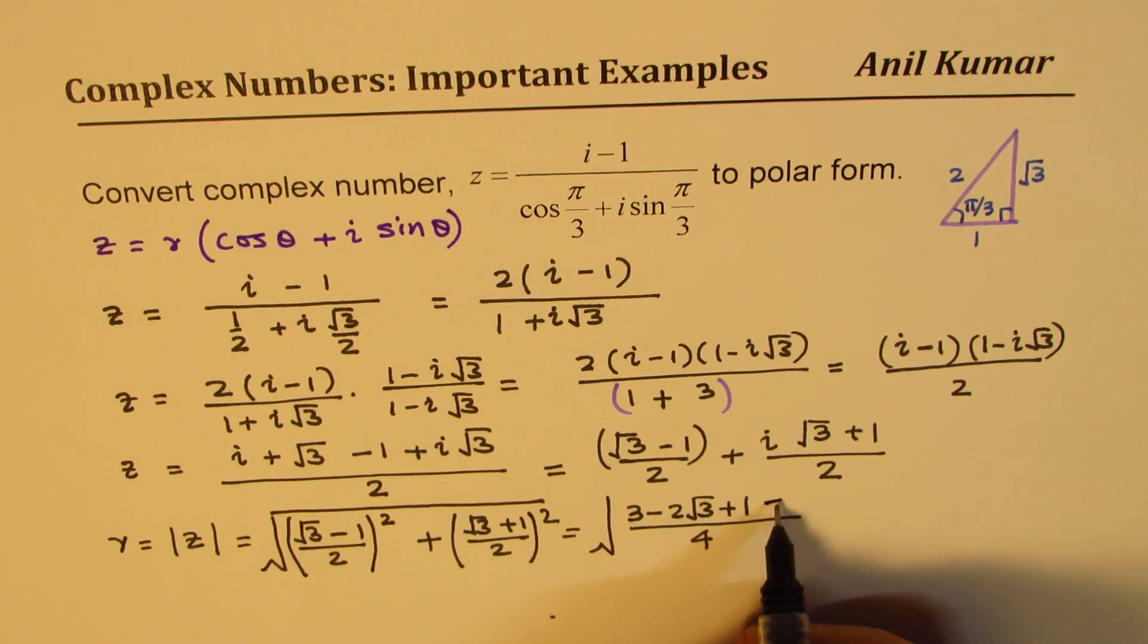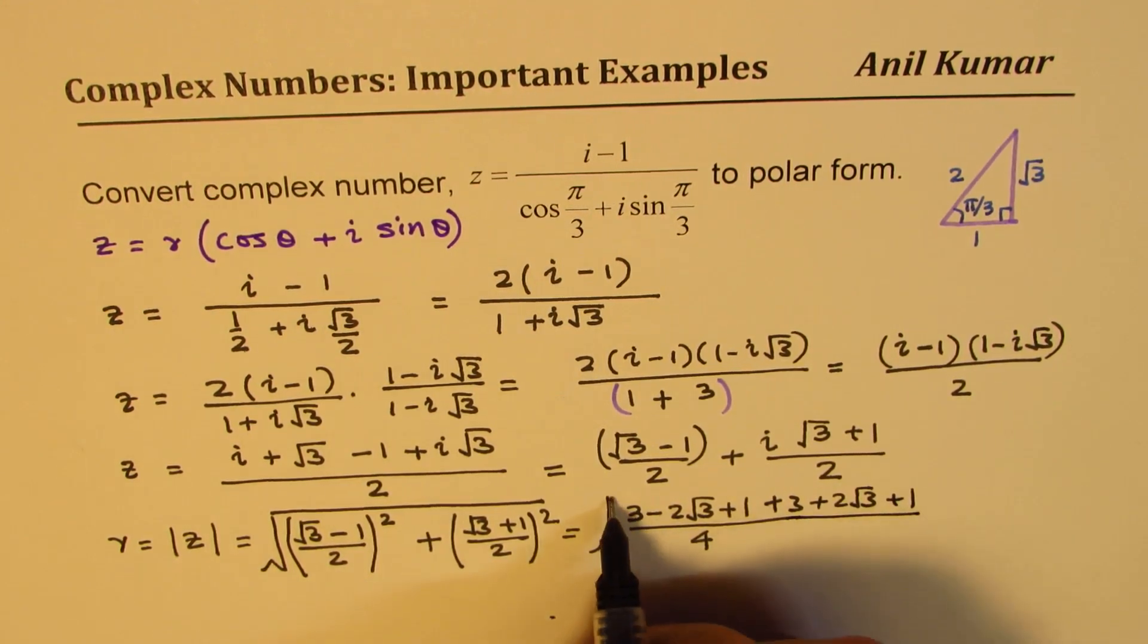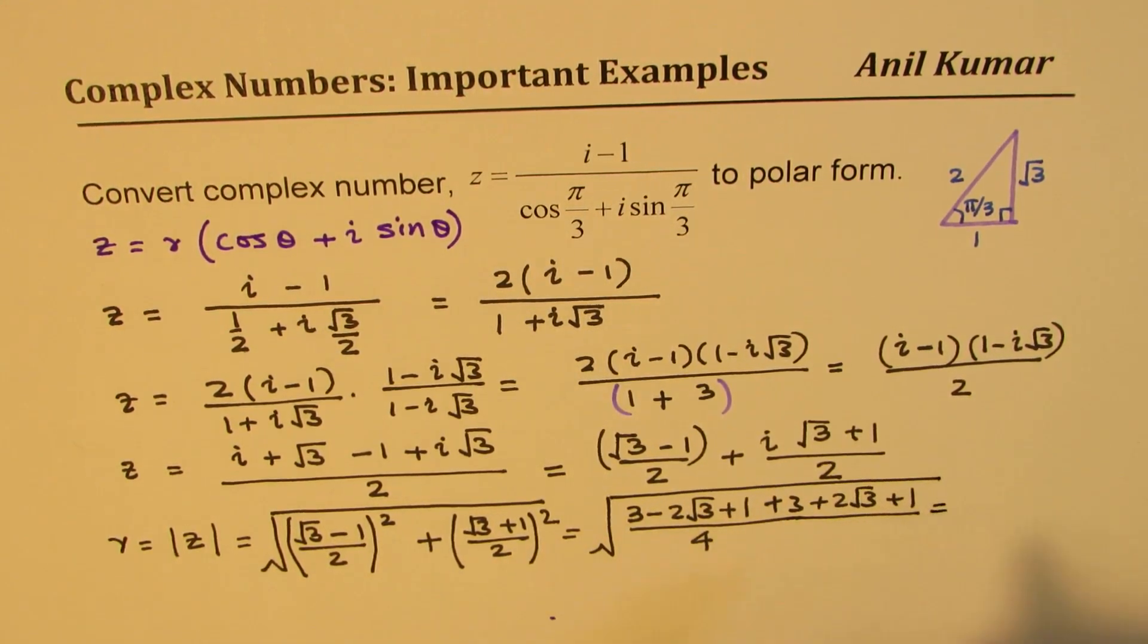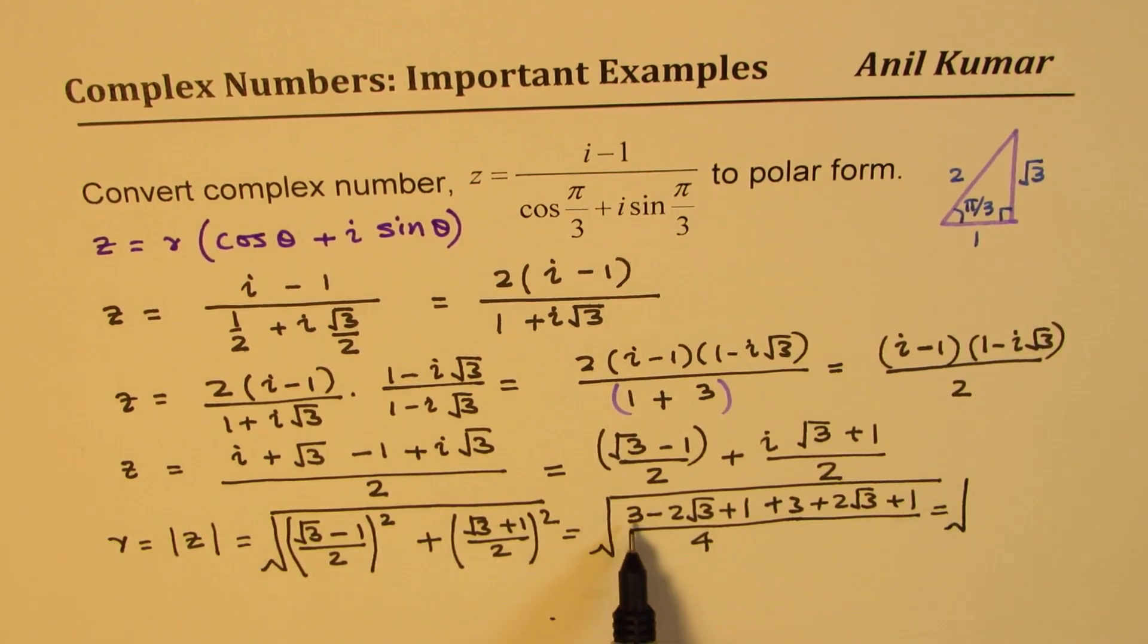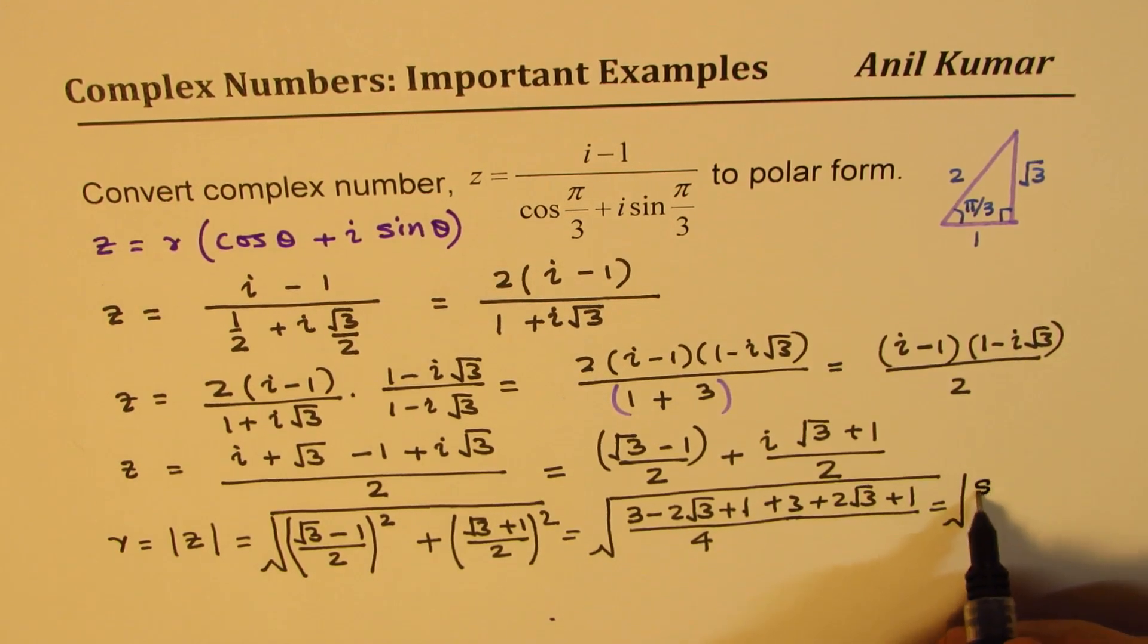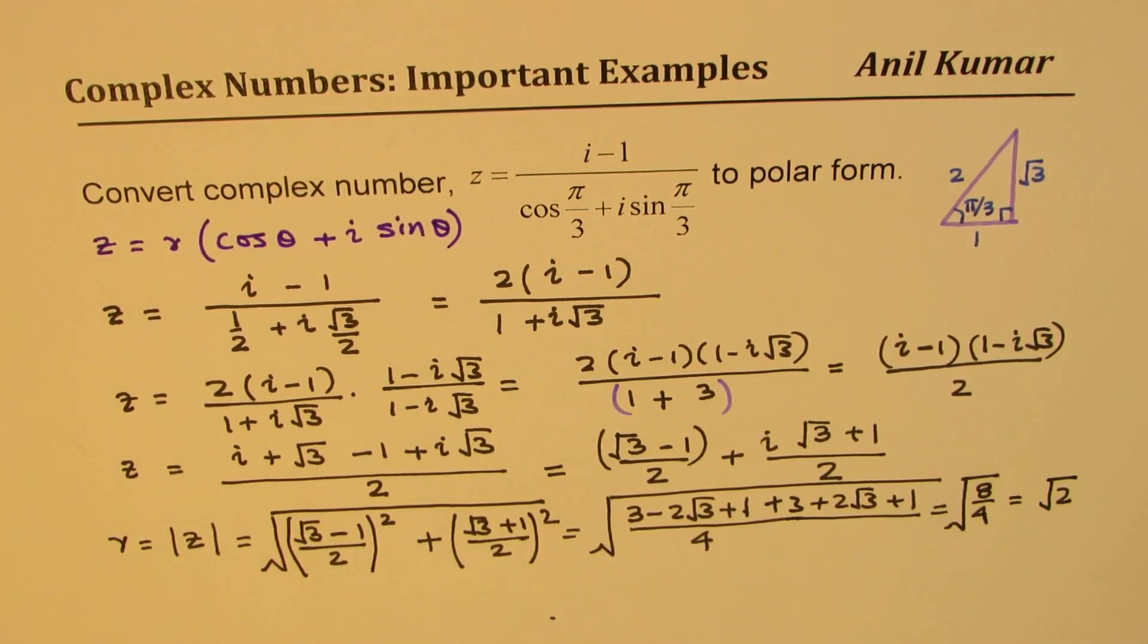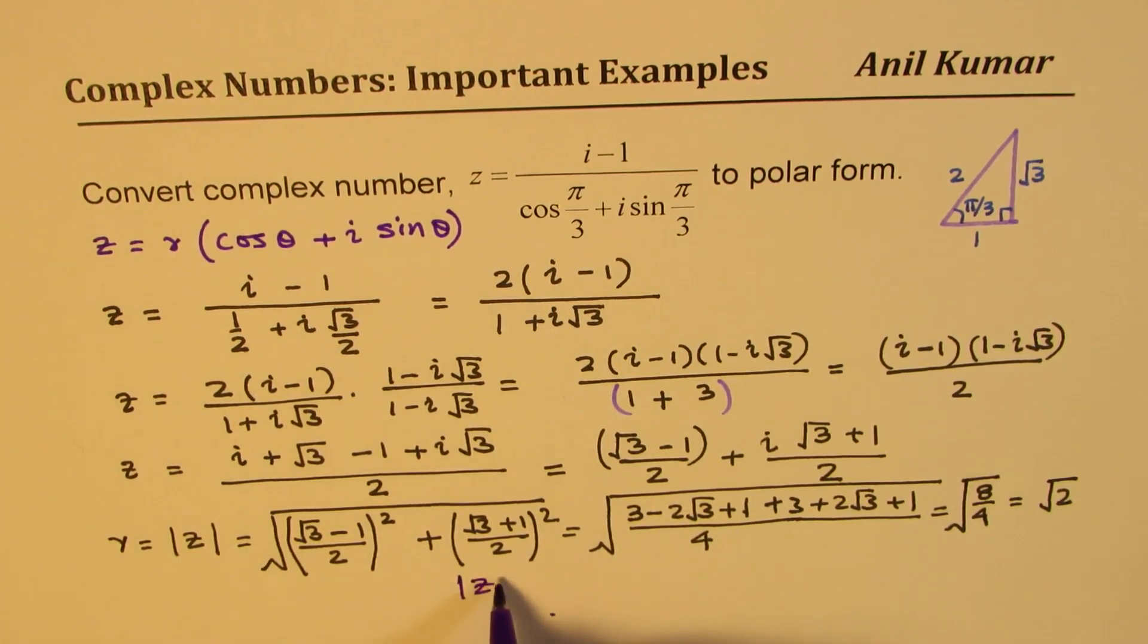We get 3 minus 2√3 plus 1, and here we get plus 3 plus 2√3 plus 1. So that gives you √(3 + 3 = 6, plus 1, plus 1 = 8). These two cancel, so we get √8 over 4, which is √2. So we found that the magnitude r equals √2.